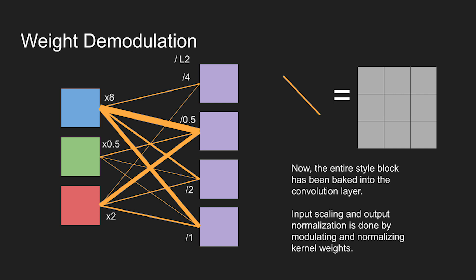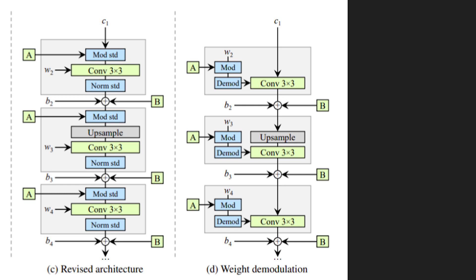Now the entire style block has been baked into the convolution layer greatly speeding up processing. But other than speeding things up did it help with anything? Actually yes.